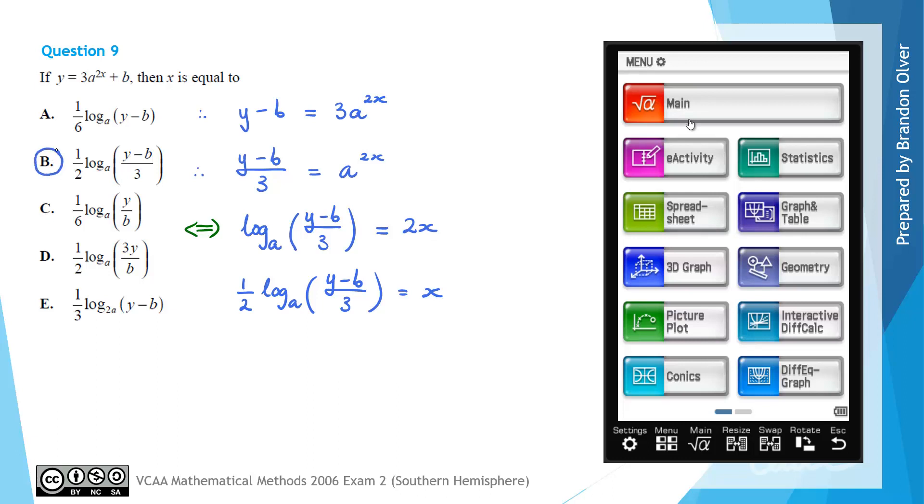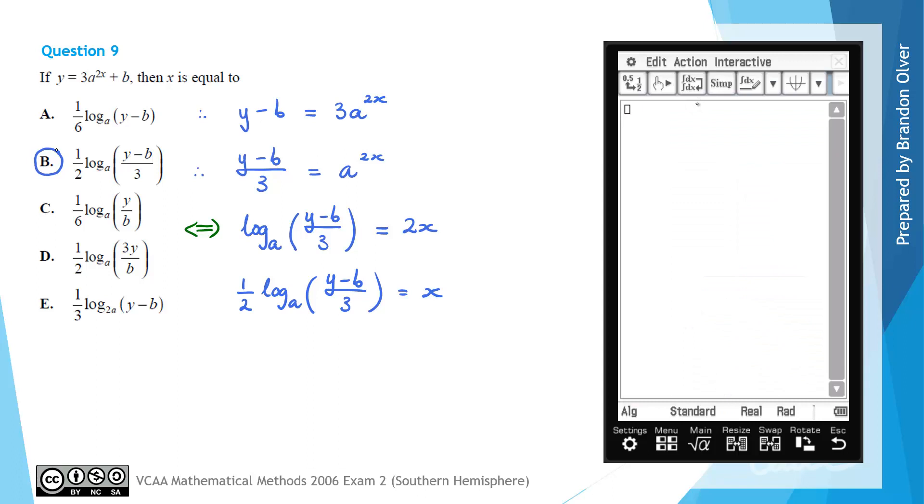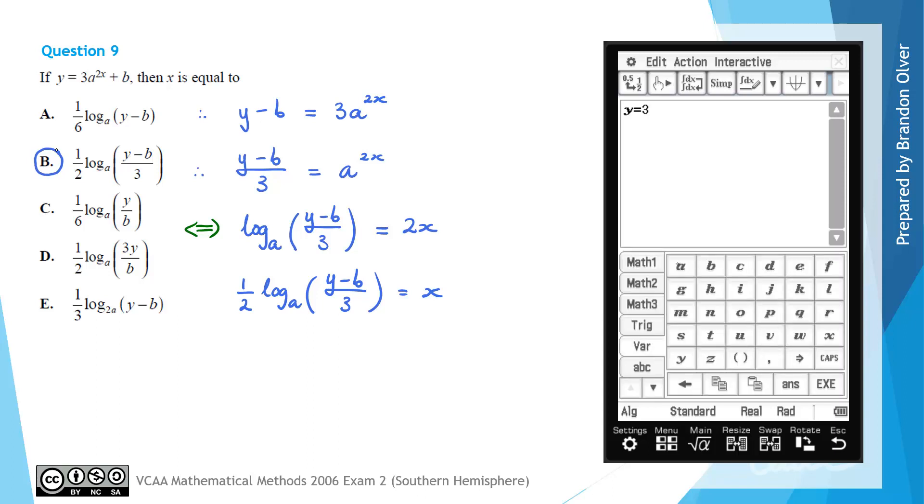We'll now have a look at how to tackle that same problem using the CAS calculator. So going into the main menu what we can do is type out our rule. So we had y equals 3 and then we can go keyboard variable to find a and we know that that was raised to the power of 2x.